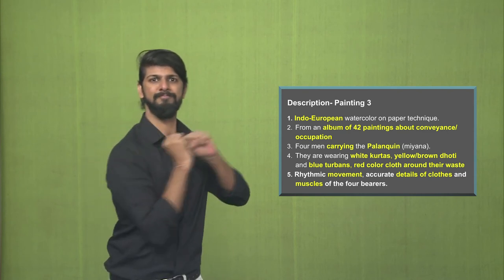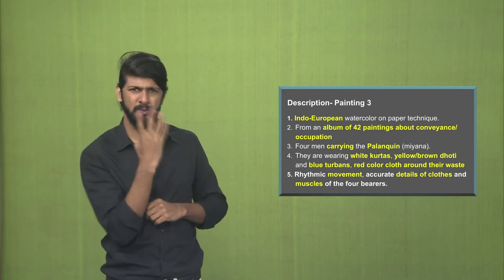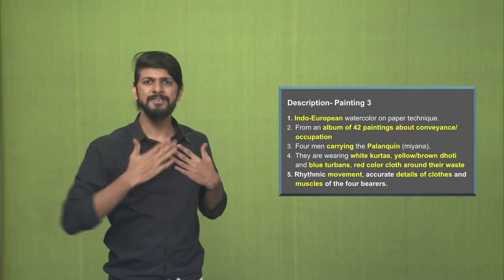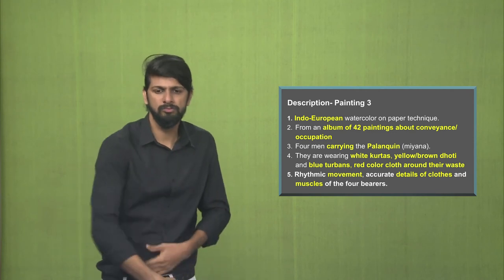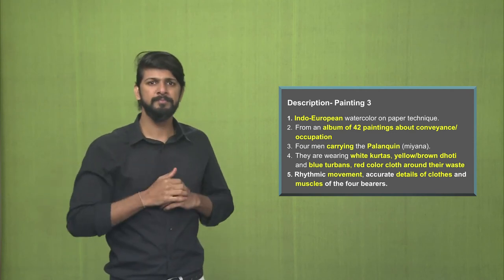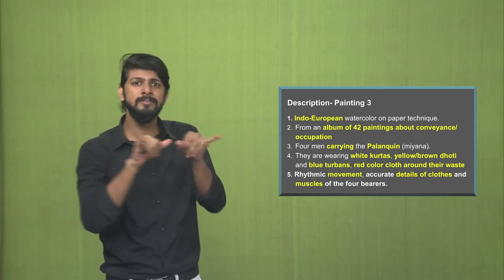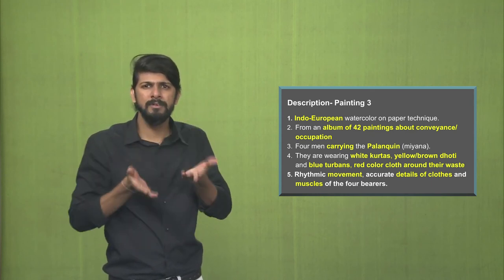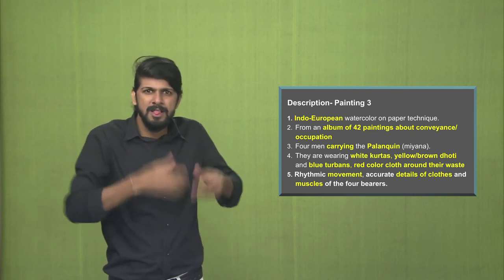As you can see in the painting, there are four men who are carrying the palanquin. What are they wearing? The carriers, all of them are wearing white kurtas, yellow and brown dhotis. They have blue turbans on their heads, very similar, all four. And a red colour cloth which they are wearing around their waist.